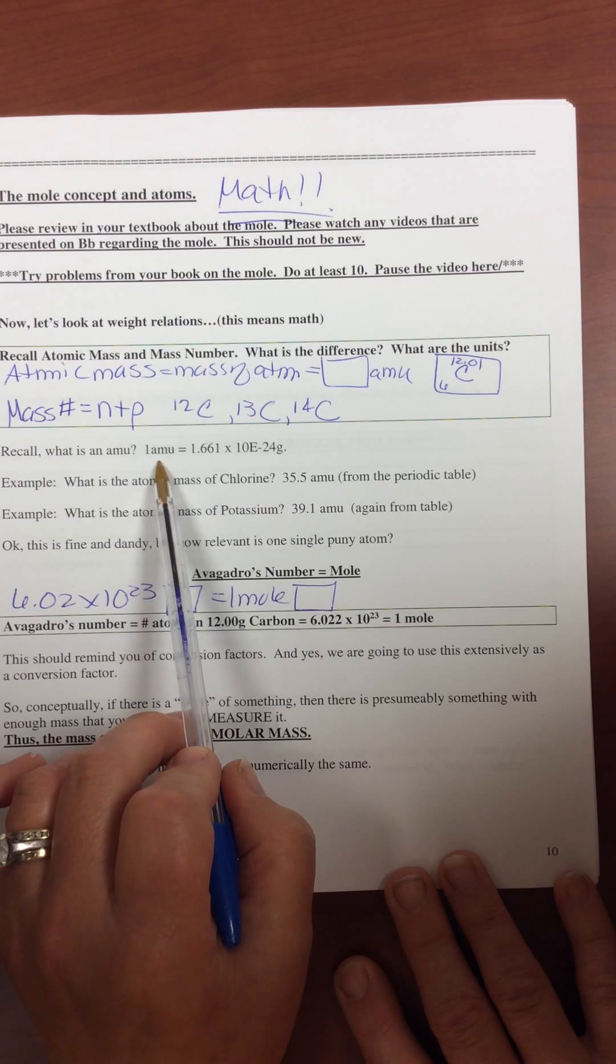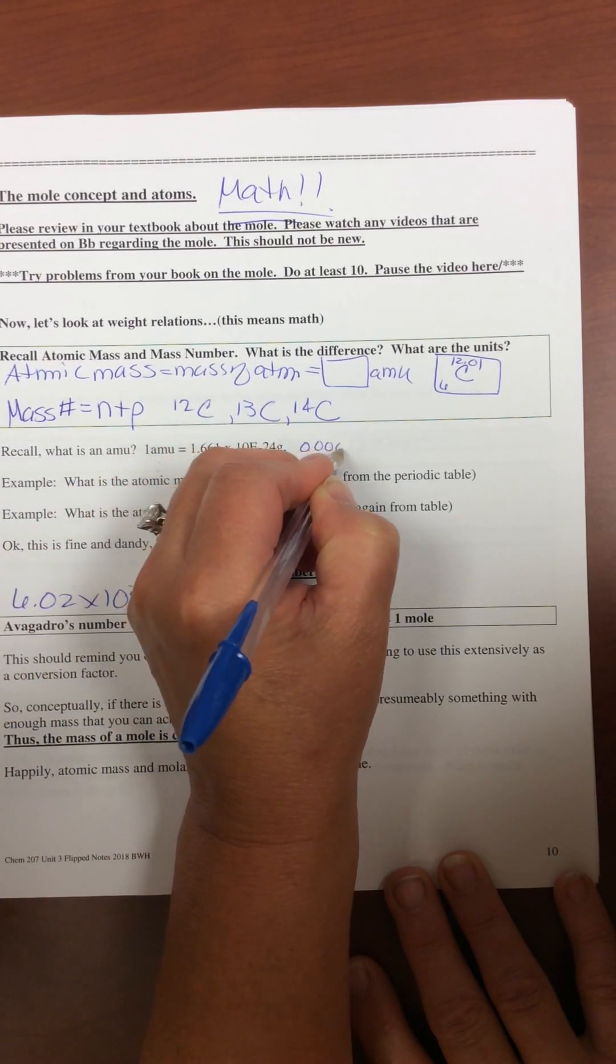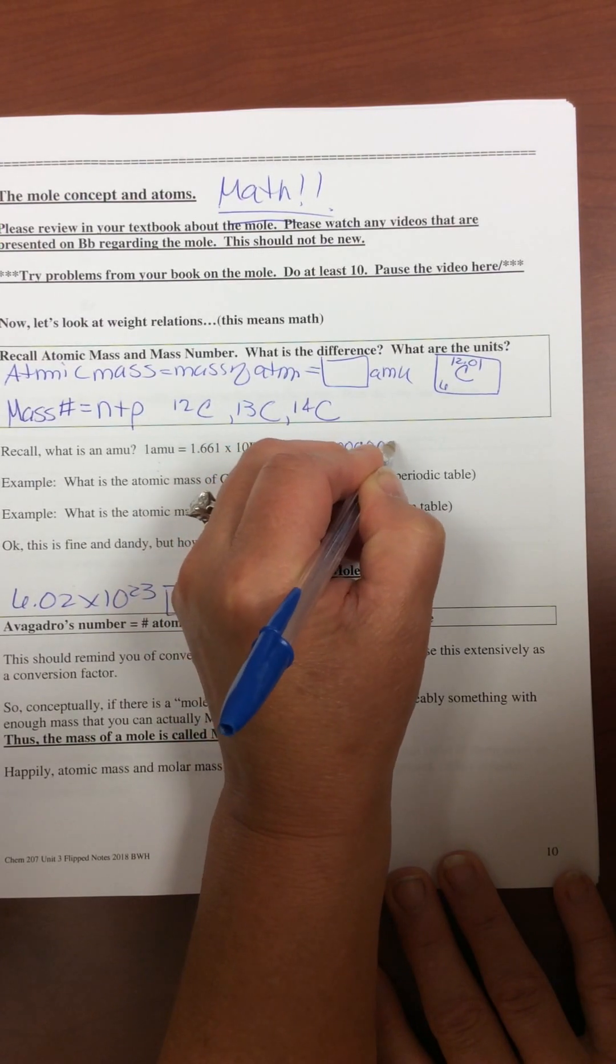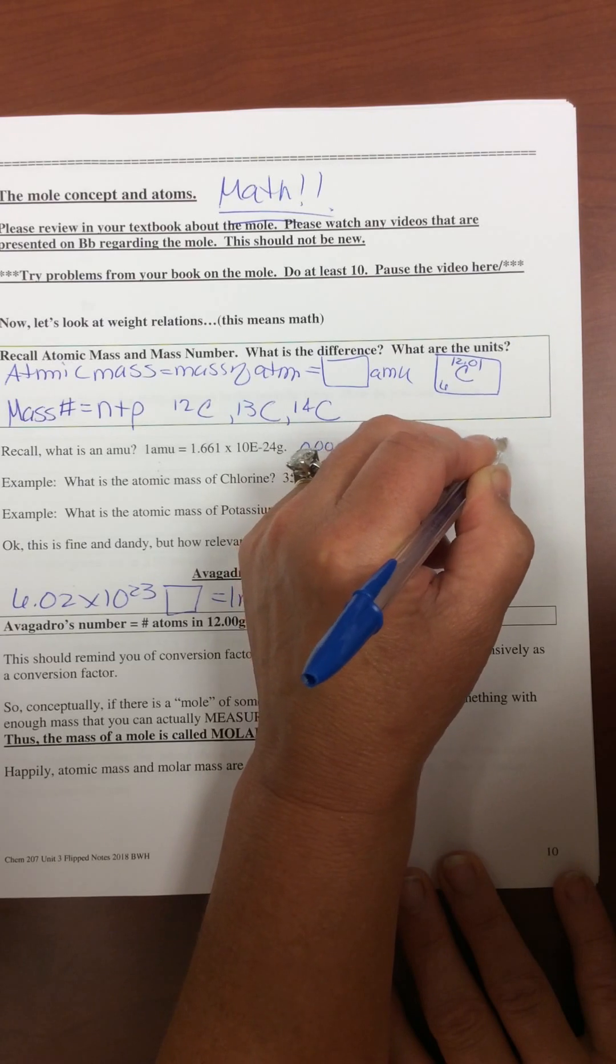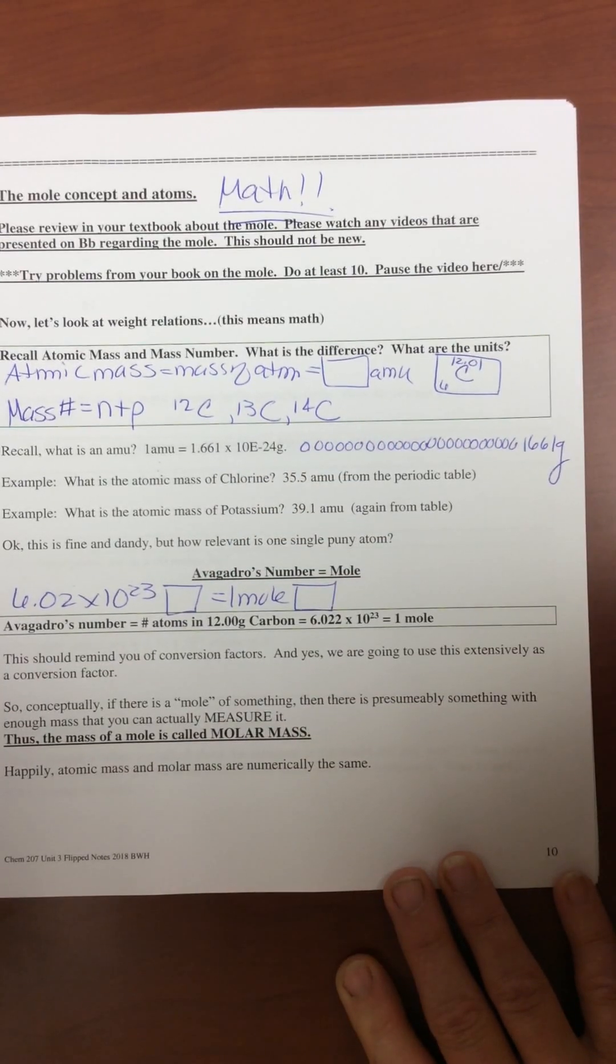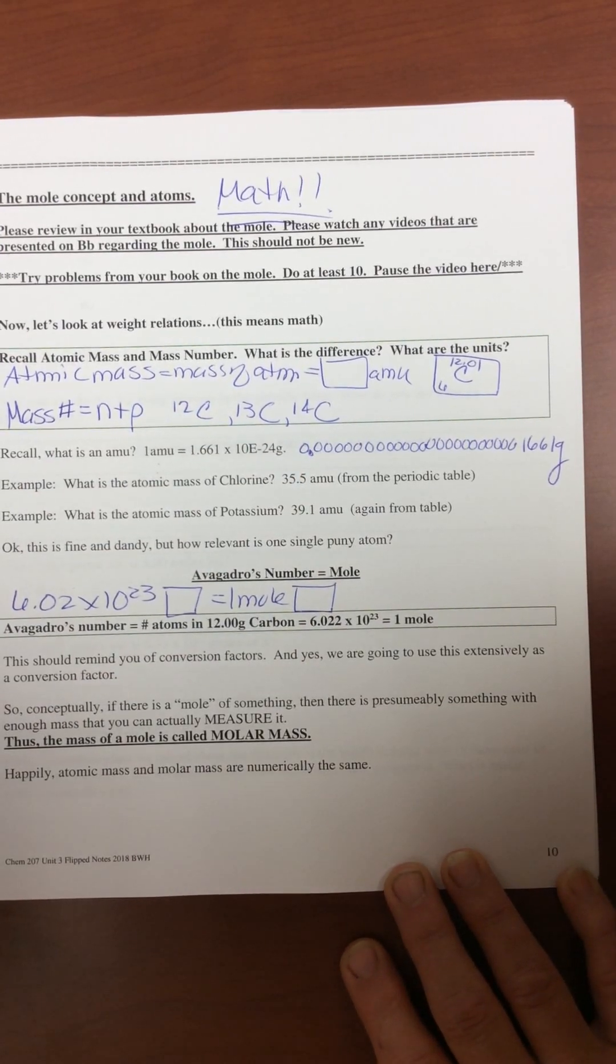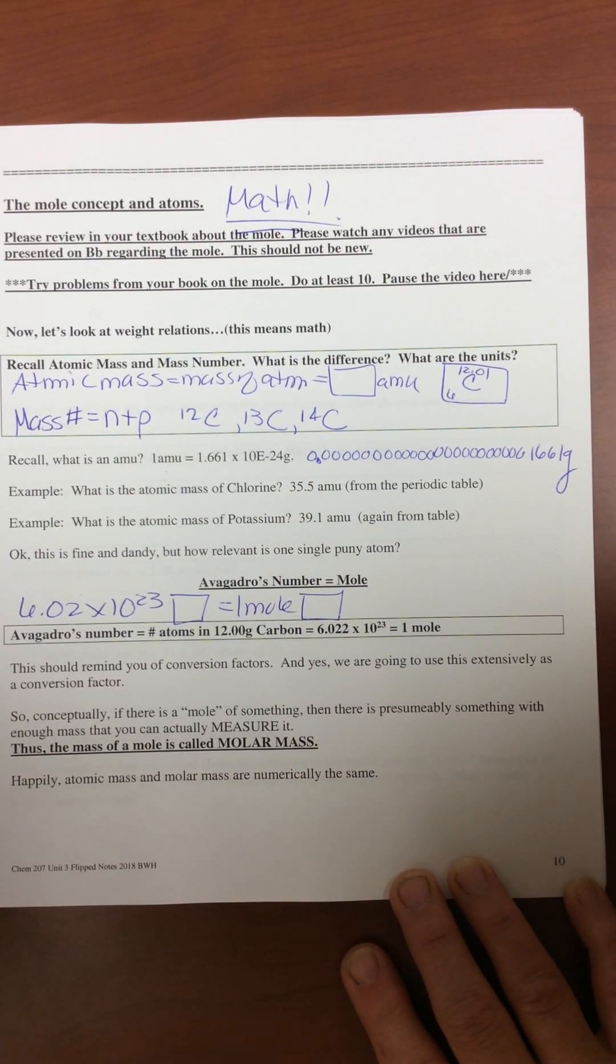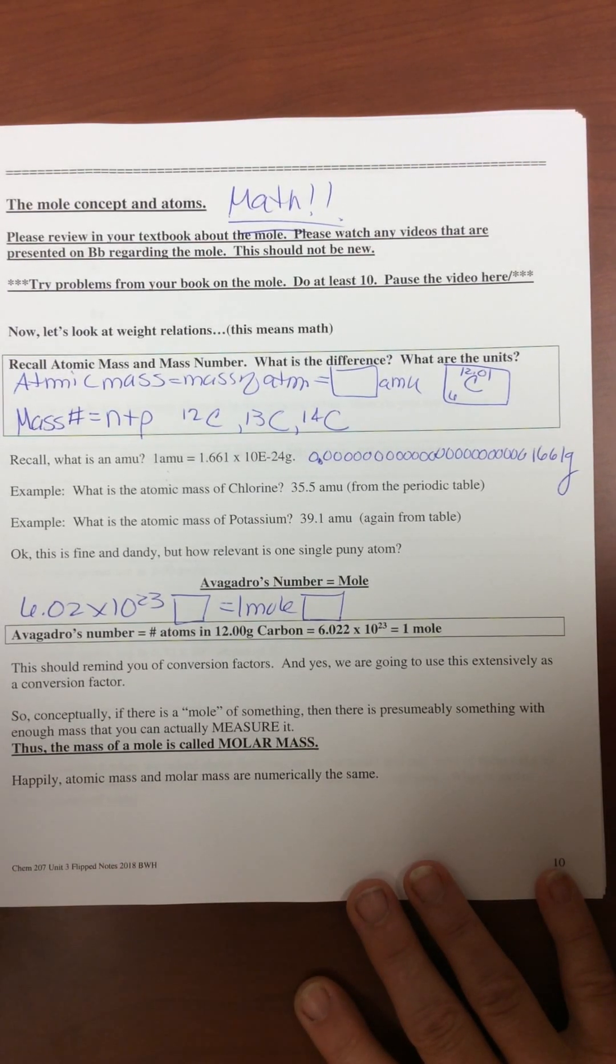Now remember that the AMU is vanishingly small. 1.661 times 10 to the negative 24 grams. So don't get it confused. An AMU is a derived unit and it's so small that you can't use it in practice.